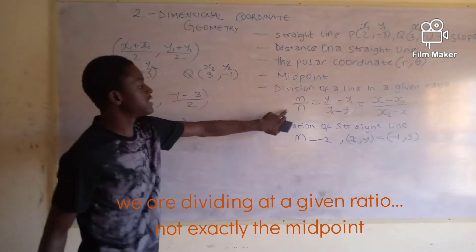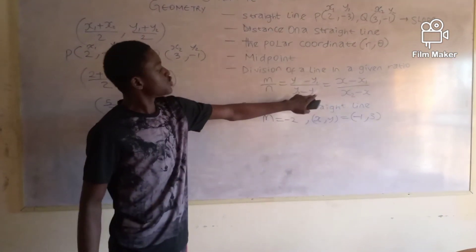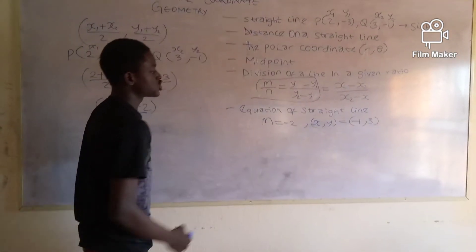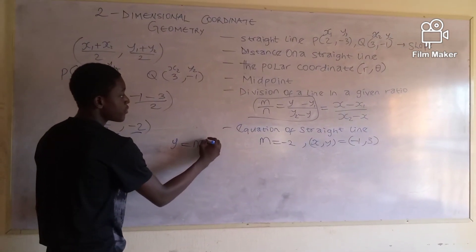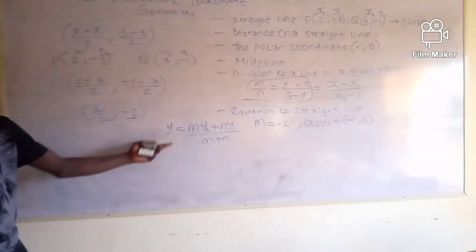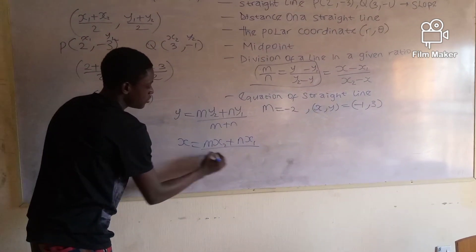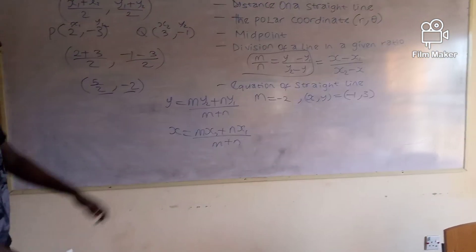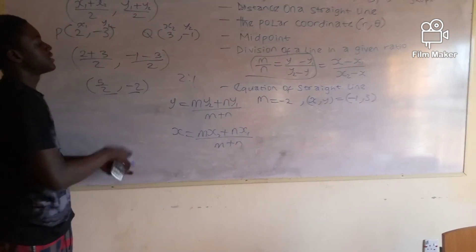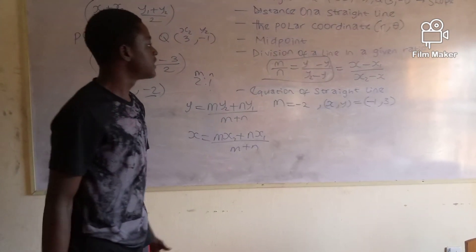When dividing a line in a given ratio, the formula uses ratio m to n: y = (m·y2 + n·y1) / (m + n) and x = (m·x2 + n·x1) / (m + n). So if we divide the line in ratio 2:1, m = 2 and n = 1, and we substitute our x and y values accordingly.